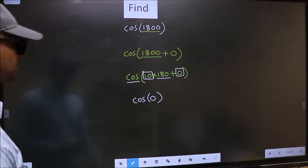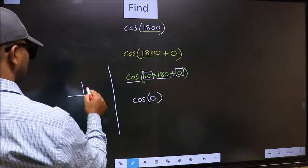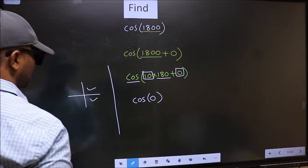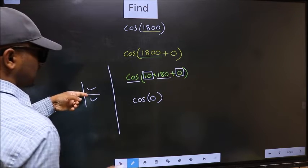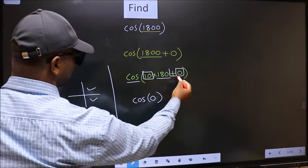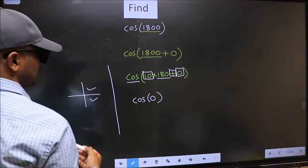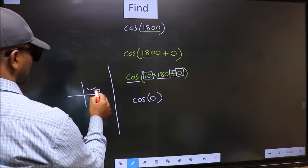And all the even multiples of 180, they lie in either the first or the fourth quadrant. So now, to select the quadrant, we should look at this symbol. Here we have plus. That means, the angle lies in the first quadrant.